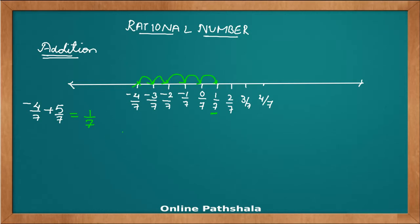Now let's do this in the way we have done for fractions. If the denominator is common, keep the denominator as it is and just add up the numerators. This gives us a quicker and easier manner: 5 minus 4 is 1 by 7. The same rule we applied for fractions applies here for rational numbers — if the denominator is the same, just add the numerators.